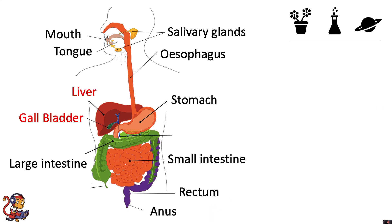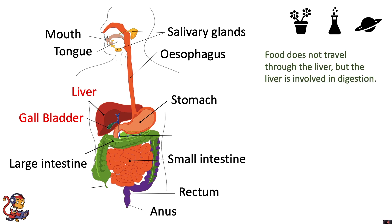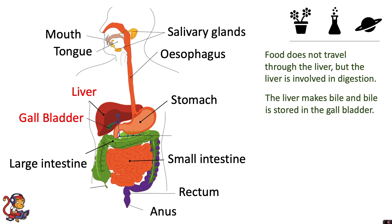There are other organs involved in digestion although the food does not pass through these organs. Food does not travel through the liver, but the liver is involved in digestion. The liver makes bile and bile is stored in the gallbladder.